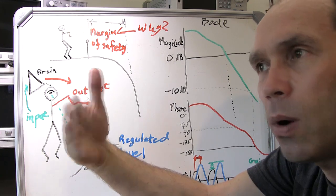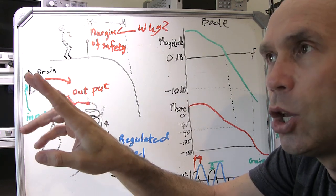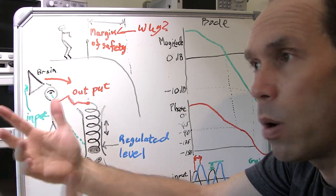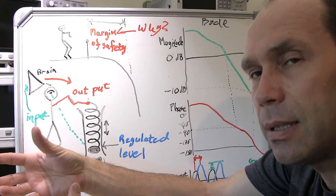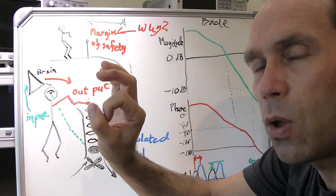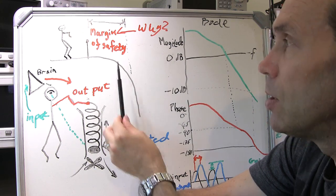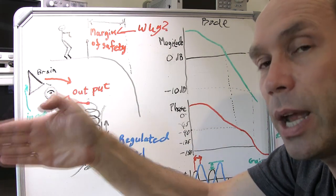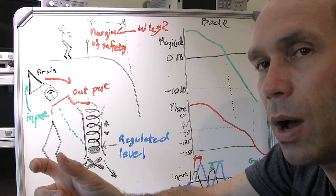Why do you need this margin? When designing a system like this, you have parasitics and don't know all the conditions your final design will operate under. One of those conditions is temperature — resistance levels might go up when hot, or the op-amp specification might change slightly in how it operates. That slight change might push you over the edge into instability. So having a greater margin — being further away from minus 180 degrees or 0 dB gain — gives you a safe area to operate in.